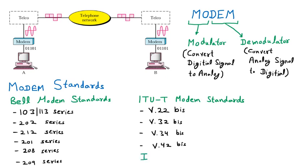The Intelligent modem is the last category. So these are the different standards of the modem which are available in the market. There are especially three types of modem: one is the traditional modem, the second one is the 56K modem, and the next one is the cable modem. These modems we are going to discuss now.